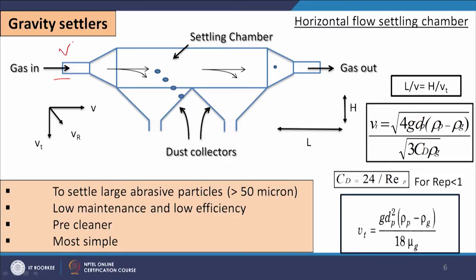If we see this figure, here the gas inlet is coming with some velocity v. This gas with velocity v contains particles that will also be having the same horizontal velocity v, but gravity is also working on the particle. So the particle is under the action of multiple forces, and one trajectory will be obtained through which the particle will move. Now the particle has a horizontal velocity v and a vertical velocity vt (terminal settling velocity), and this resultant velocity is our combined velocity.